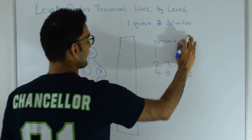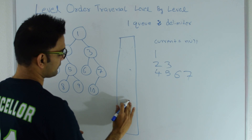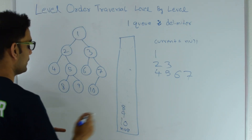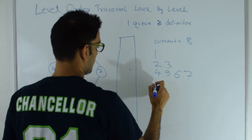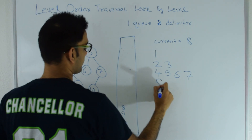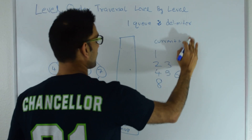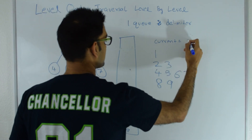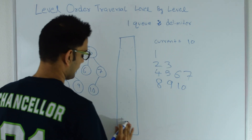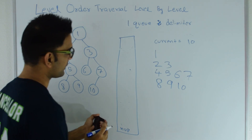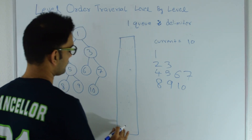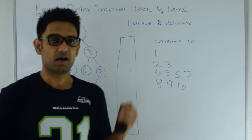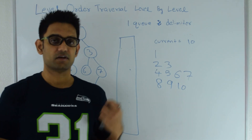Now as soon as I see a null, I push a null at the end of the queue and print a new line, starting from the next line again. Current becomes 8 — 8 doesn't have a left or right child so I just print 8. Current becomes 9 — 9 doesn't have left or right child so I print 9. Current becomes 10 — 10 doesn't have left or right child so I print 10. Now as soon as I get another null, if the queue is empty I don't push this null into the queue. So my queue is empty and I break out of the while loop. Again this will take O(n) time and O(n) space to solve this problem.